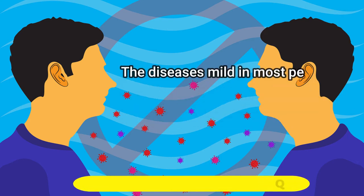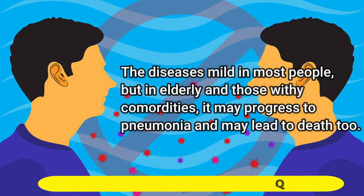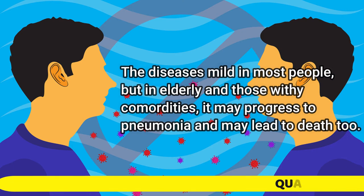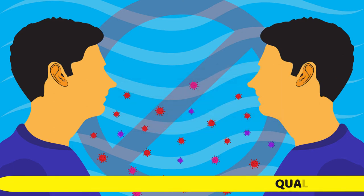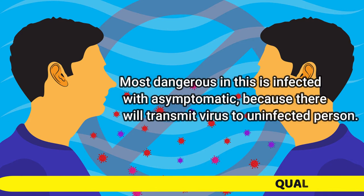The disease is mild in most people, but in elderly and those with comorbidities, it may progress to pneumonia and may lead to death too. Most dangerous in this is infection with asymptomatic individuals, because they will transmit the virus to uninfected persons.